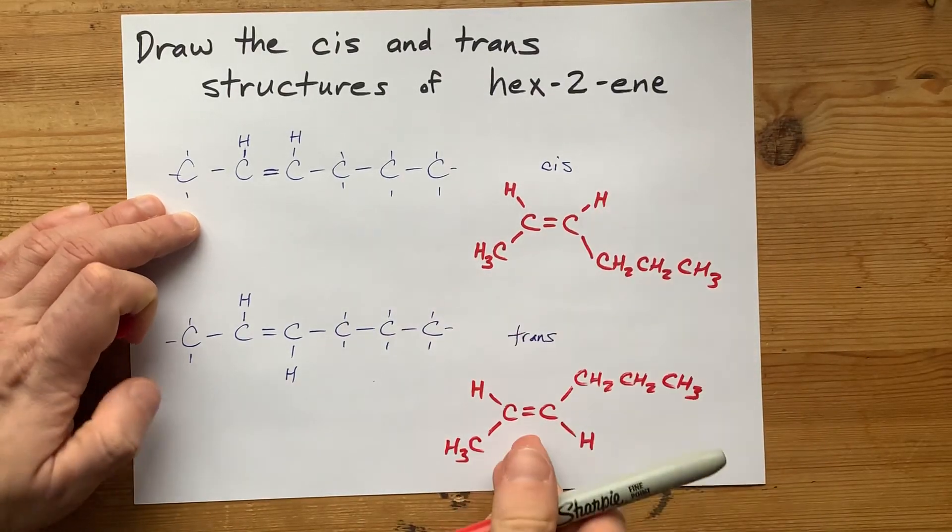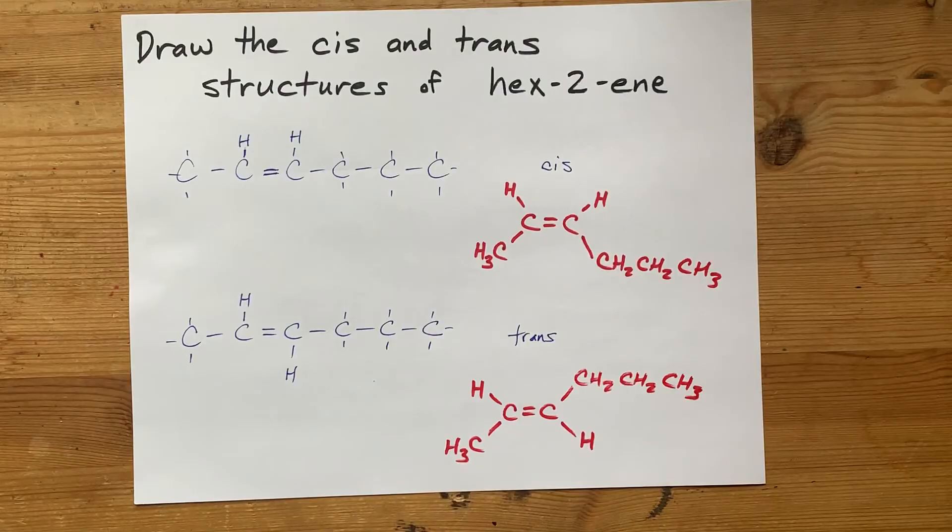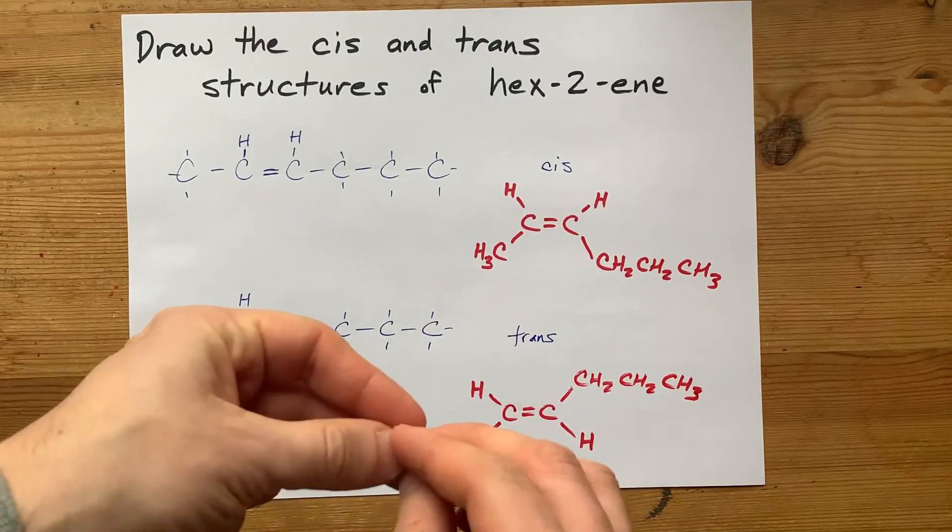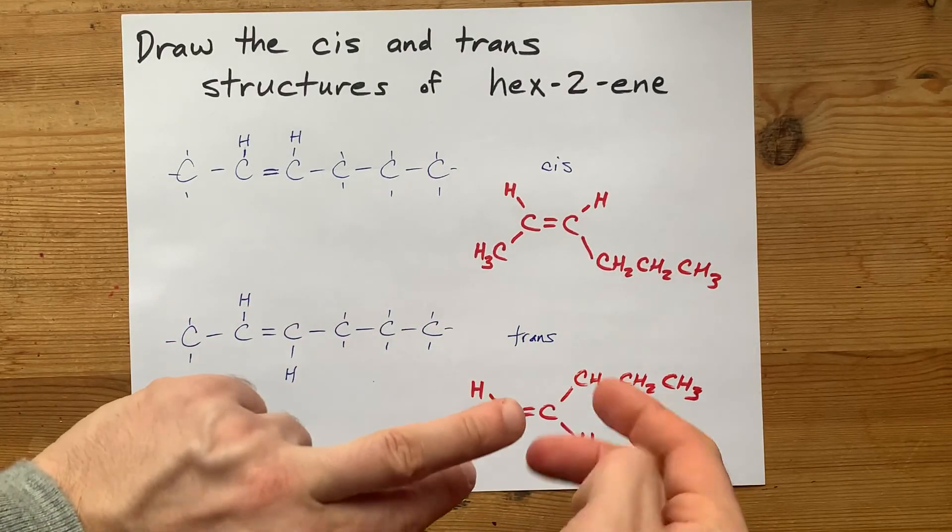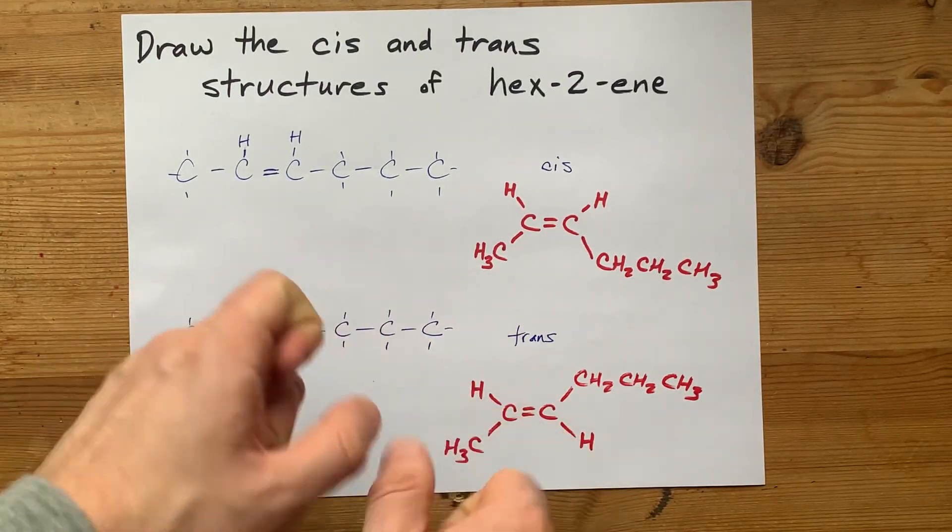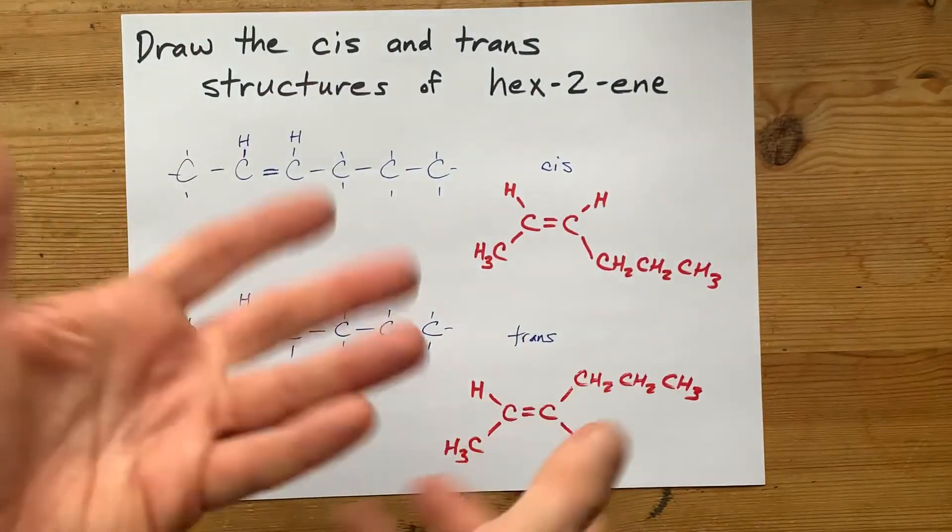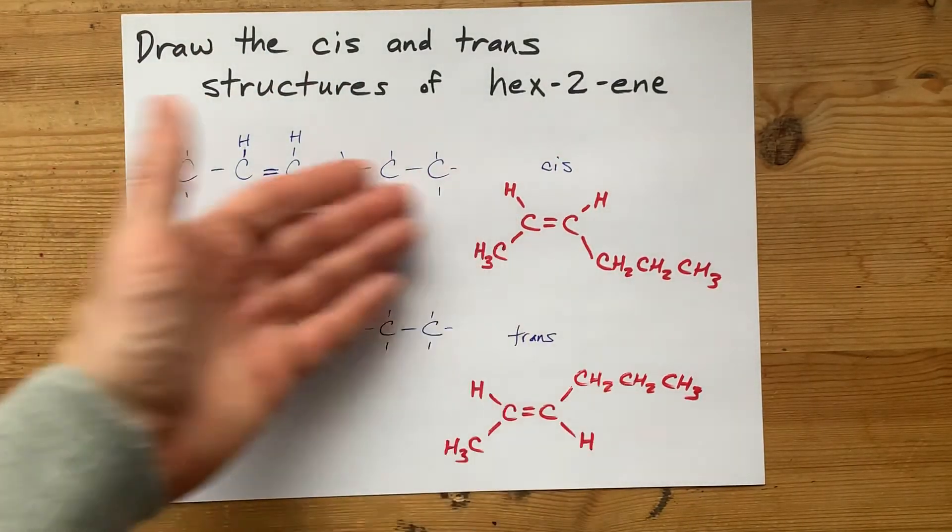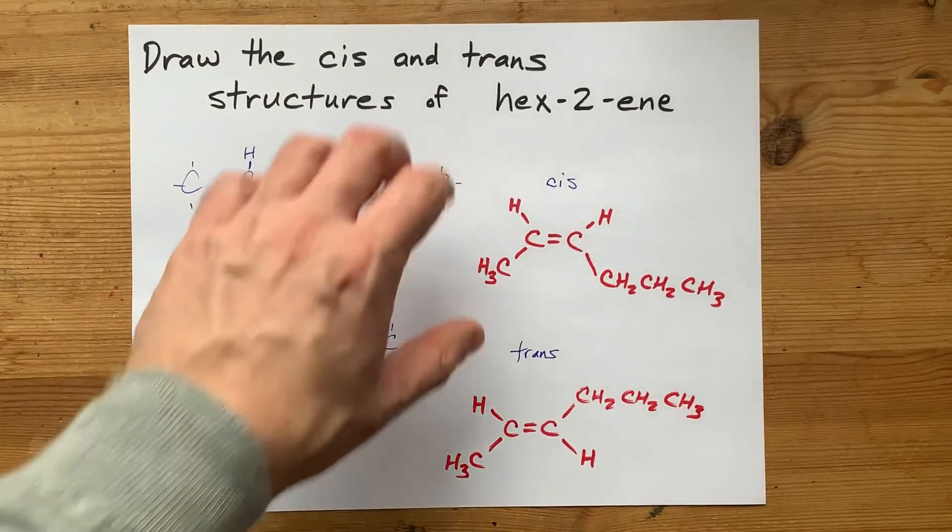These are not the same molecule, even though they have the same formula. And that's because the double bond, you can't rotate around it. It's rigid. It's stuck. So to have the hydrogens on opposite sides versus the same side affects the symmetry of the molecule. Thanks for being with me, and best of luck.